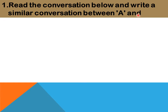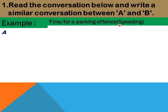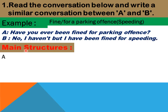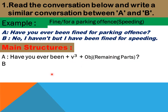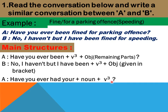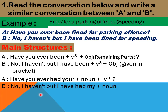This is Question 1: read the conversation below and write a similar conversation between A and B. For example, the topic is 'fined for a parking offense' and the bracket word is 'speeding.' A says: 'Have you ever been fined for a parking offense?' B says: 'No, I haven't, but I have been fined for speeding.' The structure is: A — 'Have you ever been [past participle] [object]?' B — 'No, I haven't, but I have been [past participle] [object from bracket].' The second structure uses 'have you ever had your noun [past participle]' similarly.